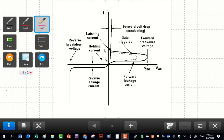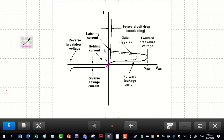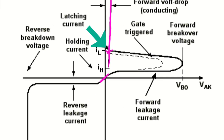Let's have a look at the current-voltage characteristics of a thyristor. In the off-state region the thyristor is off, while in the on-state region the thyristor is on. To move a thyristor from the off state to the on state, there are two ways: either increase the anode-cathode voltage until the forward breakover voltage is reached — which is not desired as it may damage the load — or apply a gate trigger signal. Applying a gate trigger signal moves the thyristor to the on state at the latching current. The latching current and holding current are both labeled on this curve.